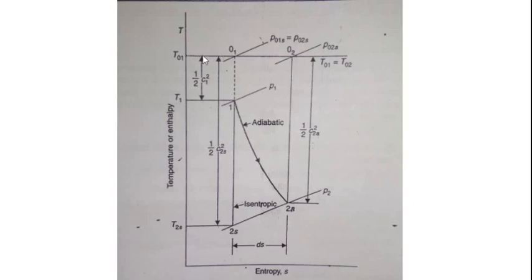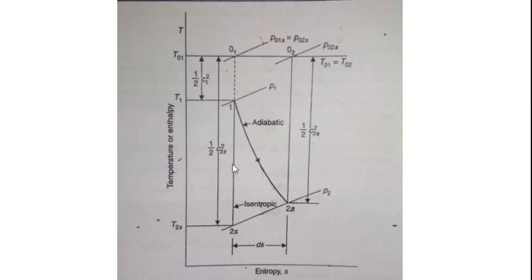T01 is the stagnation state. The adiabatic and isentropic state is T01. Stagnation enthalpy and stagnation state are the same. However, stagnation pressure P01 may not be the same if the process is adiabatic but not reversible.